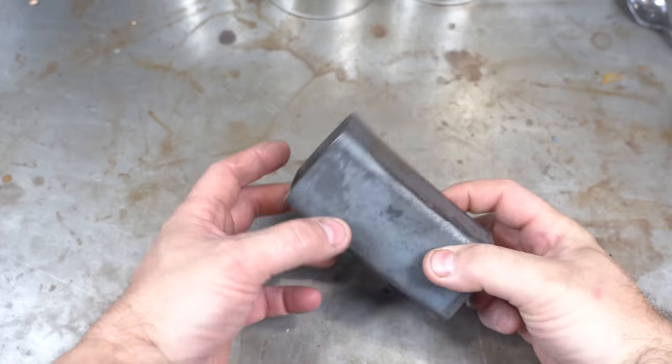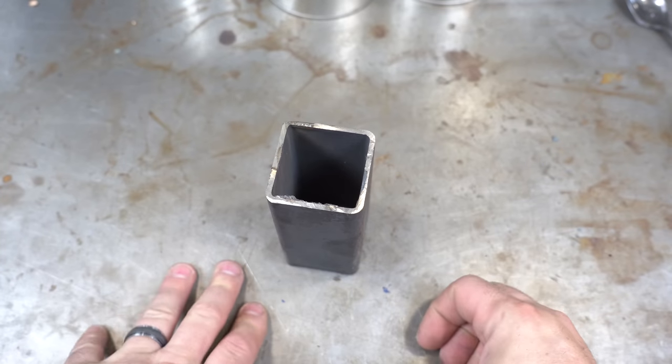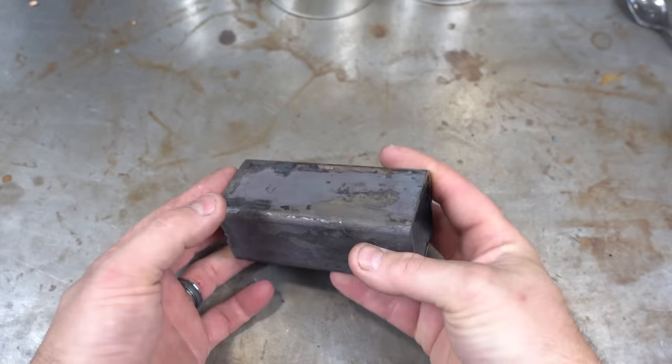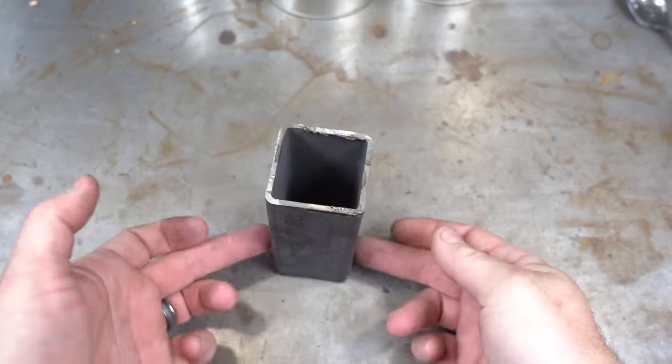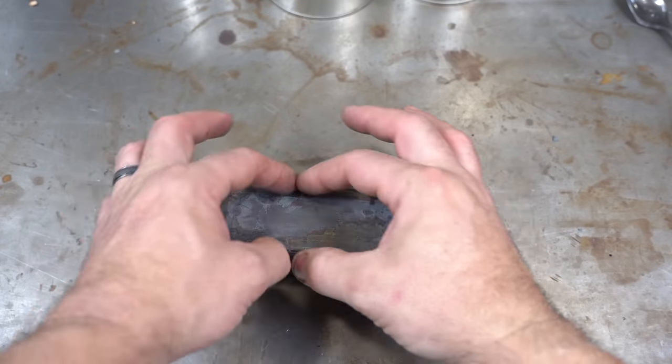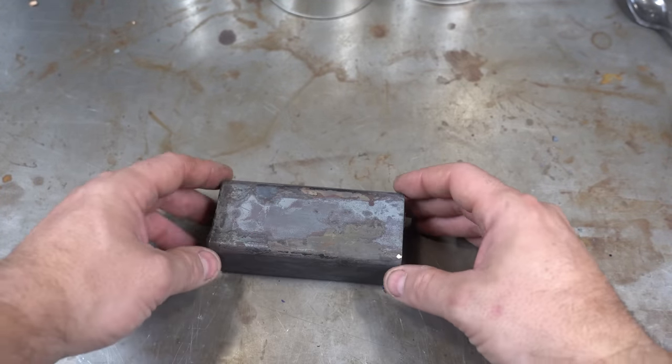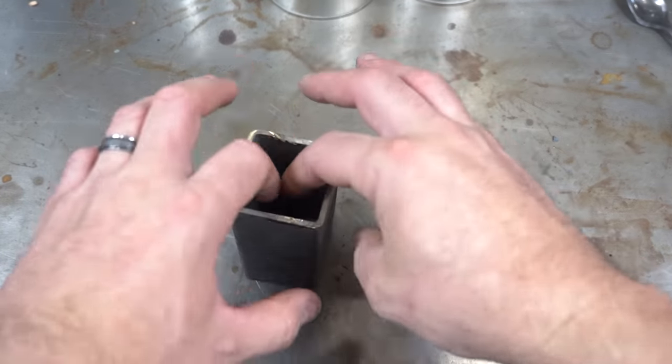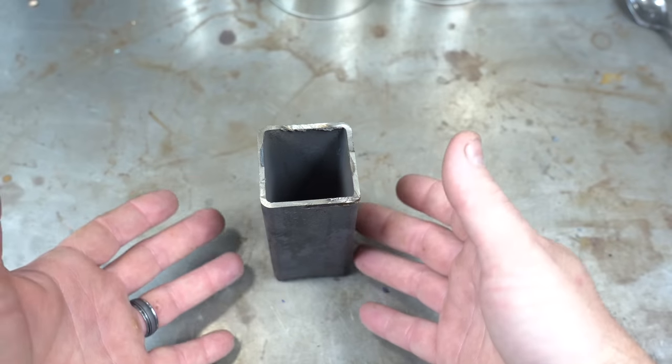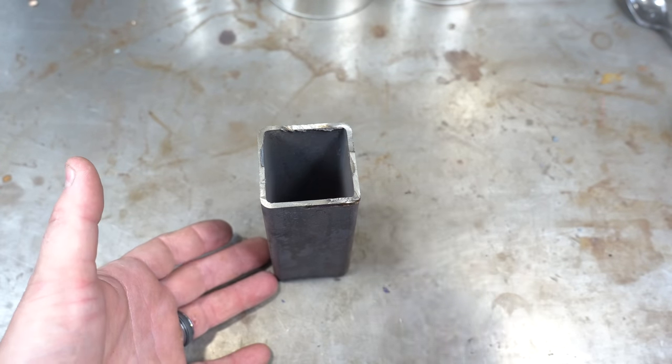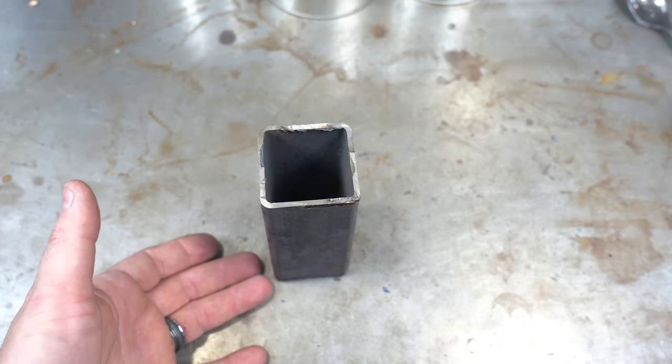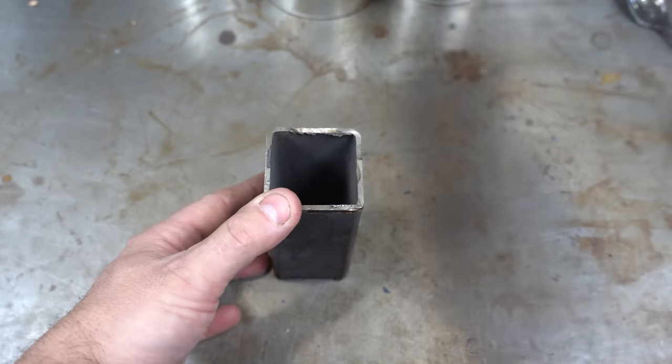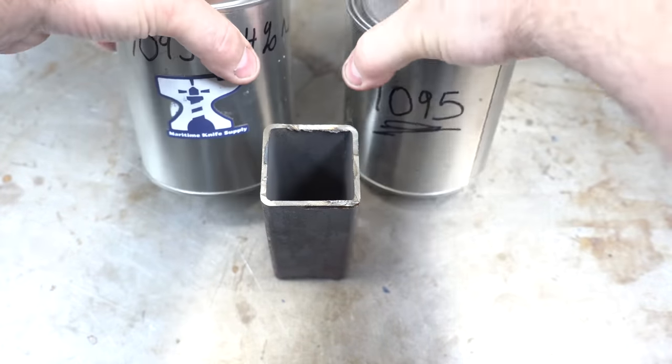So let's talk about canister. Canister Damascus is when you take some kind of container - it can be a tall canister like this or a canister with the top cut out, commonly referred to as canoe. You're going to fill it full of something like ball bearings or chain, whatever you want to put in here, and then fill it with powdered steel. This is 1095 powder.